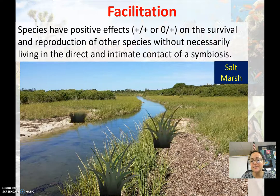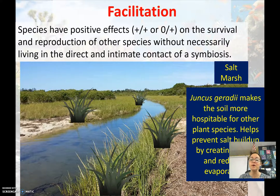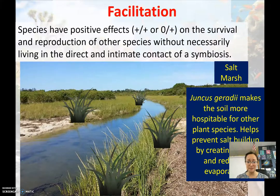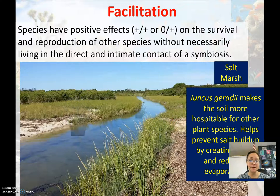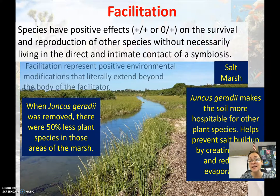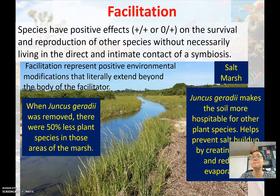This plant makes the soil more hospitable for other plant species — it helps prevent salt buildup, creates shade, and reduces evaporation. So this one species' presence in the salt marsh helps other plant species living there. It's not a mutualistic or commensalistic relationship, but its presence helps the ecosystem. When you remove this plant species, you find 50% fewer plant species in that area of the marsh.